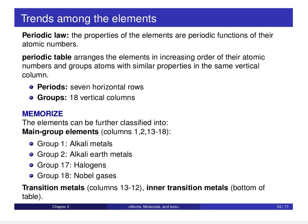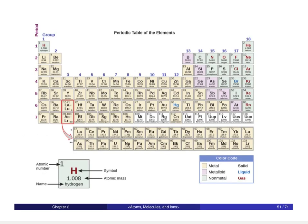The periodic table goes even further, with additional so-called periodic laws that group elements together as periodic functions of their atomic number. When looking at the periodic table, the atomic number is the small number in the top left of each element's box, telling us the number of protons. So atomic number equals number of protons.